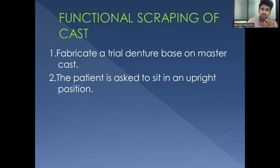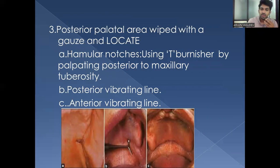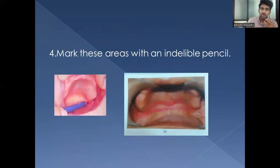For functional scraping of cast, a trial denture base is fabricated on the master cast. The patient sits in an upright position and the posterior palatal seal area is wiped with gauze and located using a T-burnisher. The hamular notches are palpated posterior to the maxillary tuberosity. Then the posterior vibrating line and anterior vibrating line are checked and marked using the Valsalva maneuver and vigorous 'ah' sound, and marked with an indelible pencil.